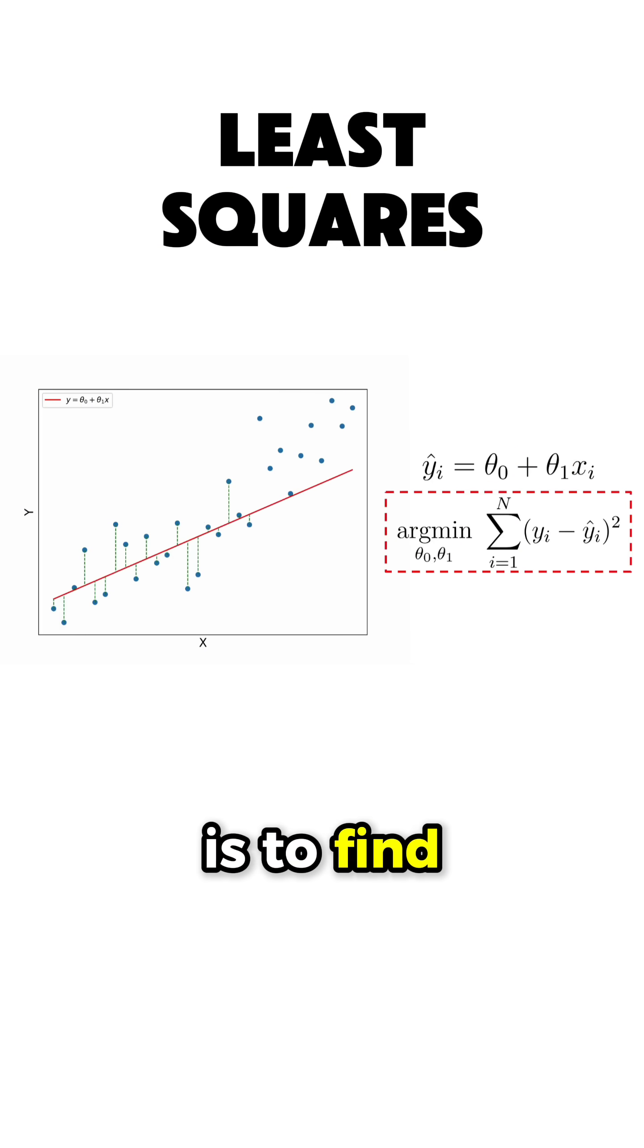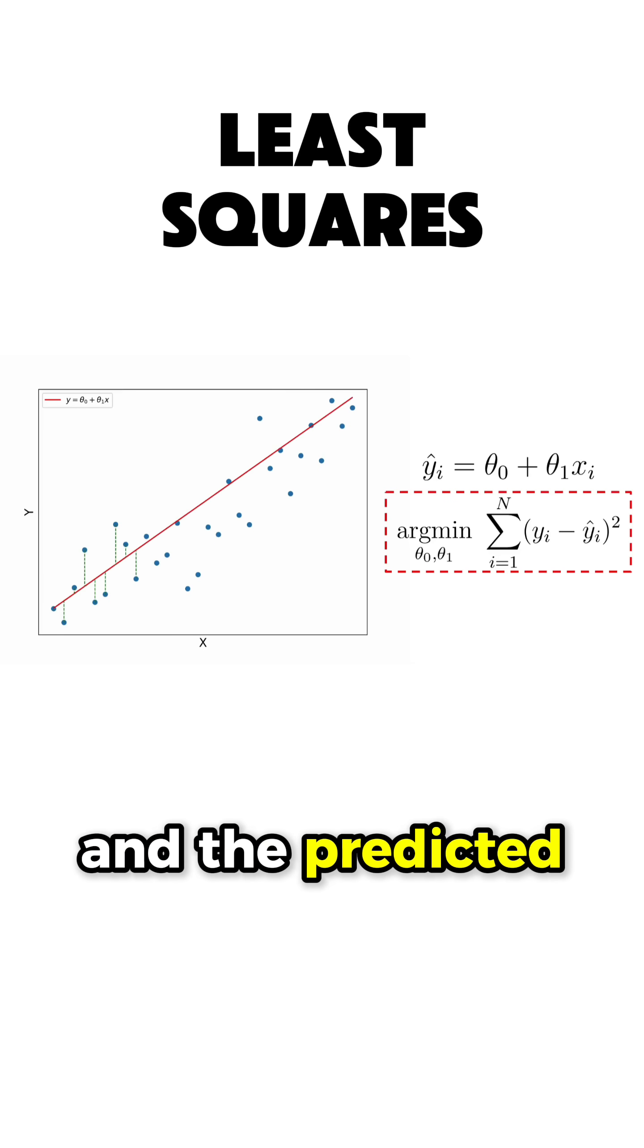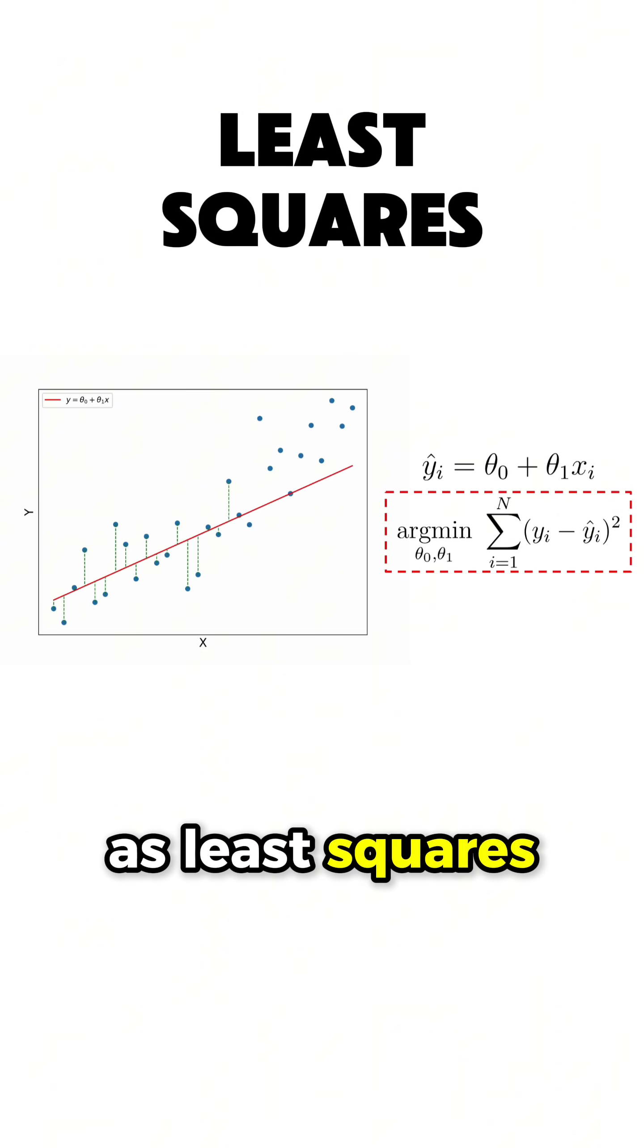And the goal here is to find the values of theta0 and theta1 that minimize the sum of the square differences between the observed y-values and the predicted y-values based on the linear model, a method known as least squares.